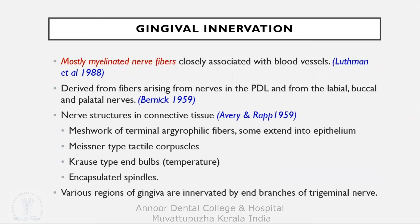Nerve supply: mostly myelinated nerve fibers, closely associated with blood supply. Derived from fibers arising from nerves in the PDL and from the labial, buccal, and palatine nerves. Four major nerve structures in the connective tissue include: a meshwork of terminal argyrophilic fibers that extend into the epithelium; Meissner-type tactile corpuscles; Krause-type end bulbs for temperature sensation; and encapsulated spindles. The various regions of gingiva are innervated by branches of the trigeminal nerve.